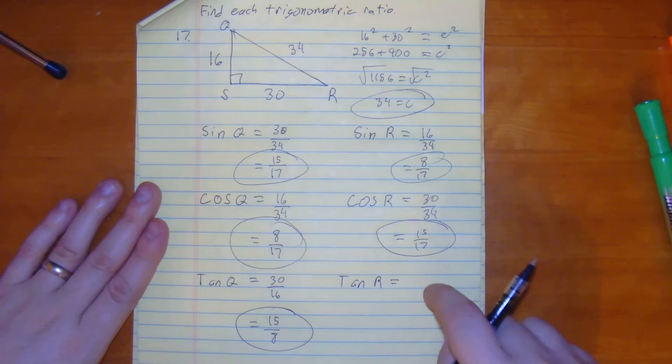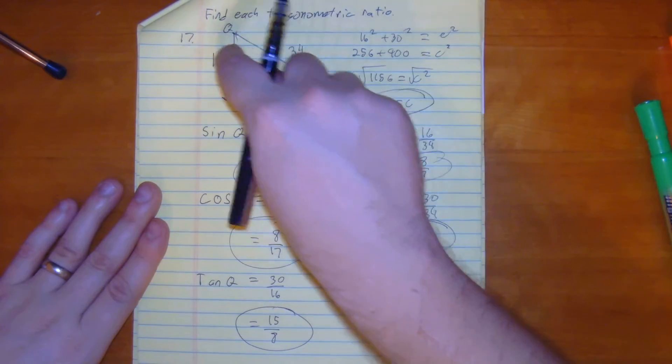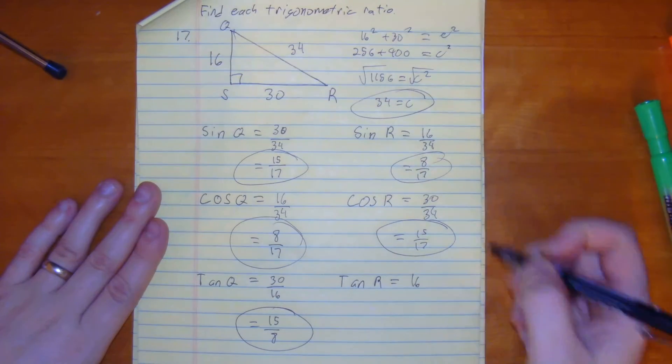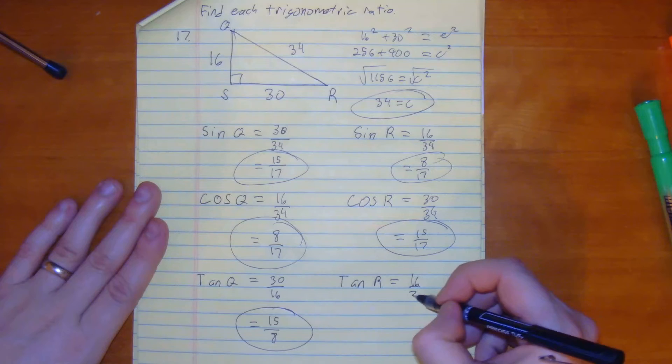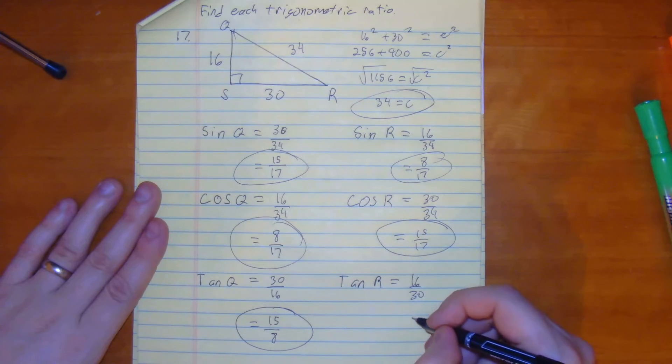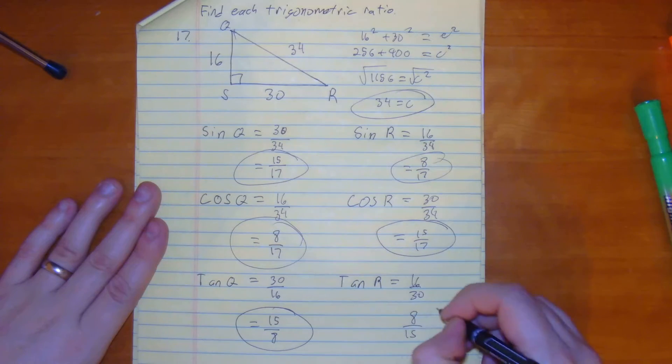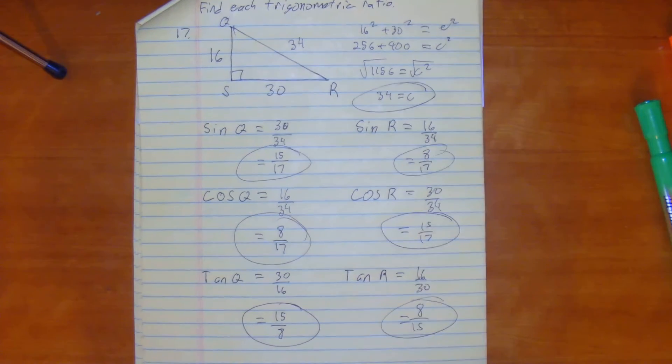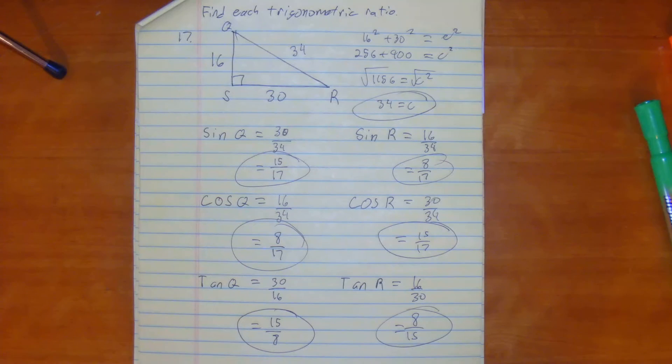And then the tan of r would be opposite 16 over 30. 16 over 30 would simplify to 8 over 15. Alright, and that's all for number 17.